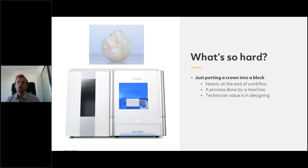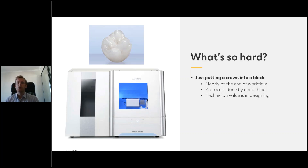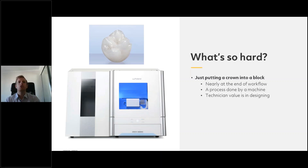CAM is ultimately a process done by a machine — computer aided manufacturing. There's a computer and the manufacturing, and then there's us in the middle aiding it. It's a symbiotic relationship between man and machine. If you think of a Roland mill such as the 52 DCI, we've got a bunch of motors: one goes up and down, one left and right, one forward and back, and then two more tilt. It's only as clever as the information you give it.